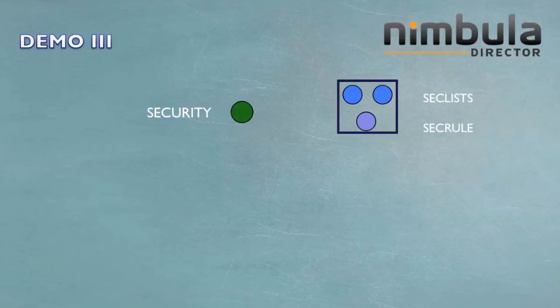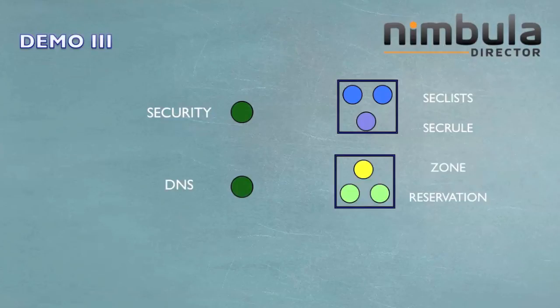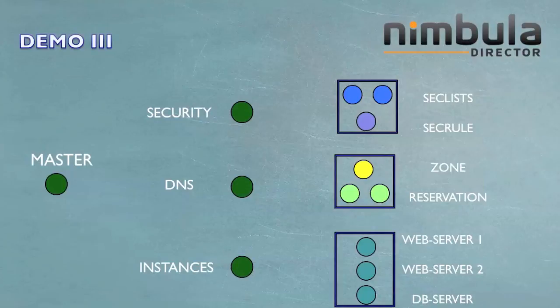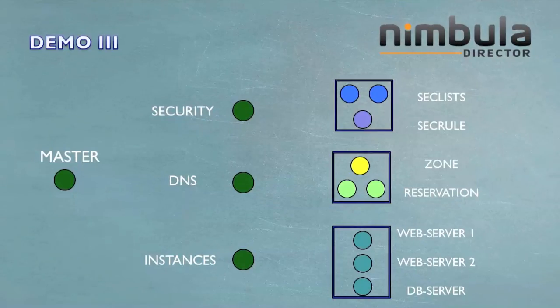In this final demo, we will demonstrate composite orchestrations. We have a security orchestration that will drive security objects, a DNS orchestration that manages DNS objects, and an instances orchestration that deals with two web servers and a DB server. We also have a master orchestration that will drive the security, DNS, and instances sub-orchestrations. You can orchestrate any other cloud objects like NAT or storage in a private or public cloud.